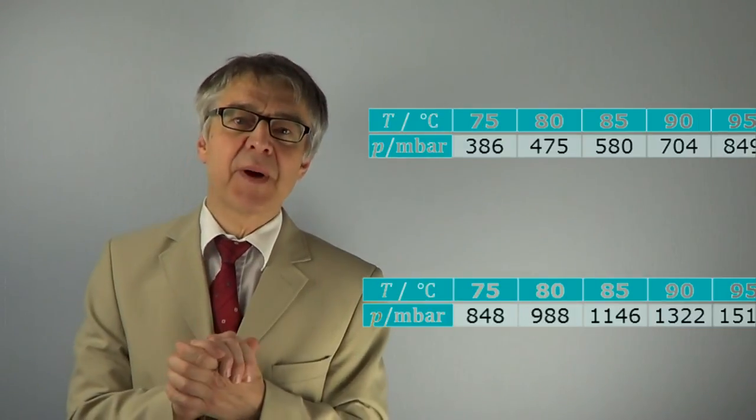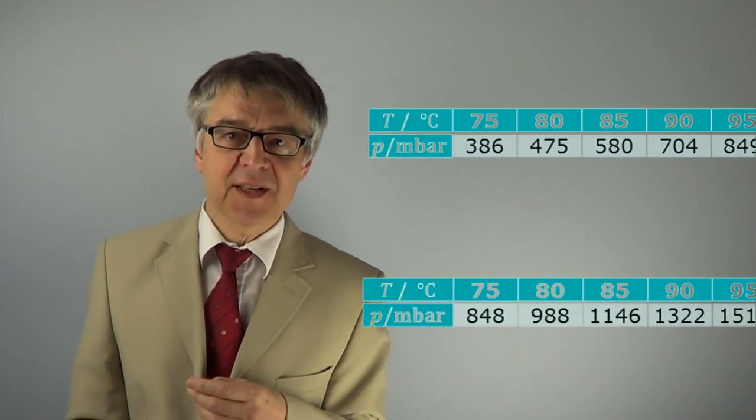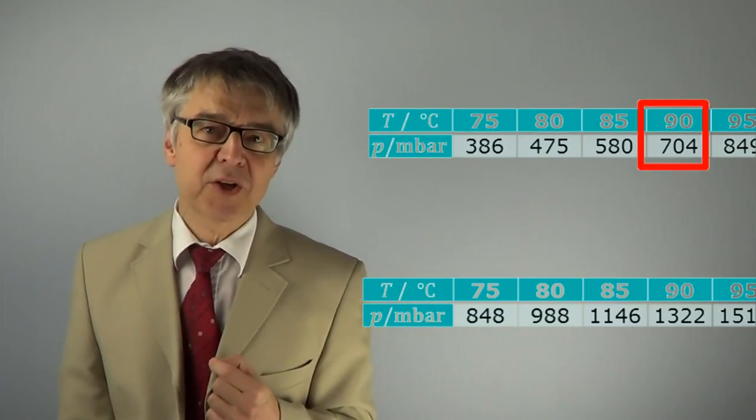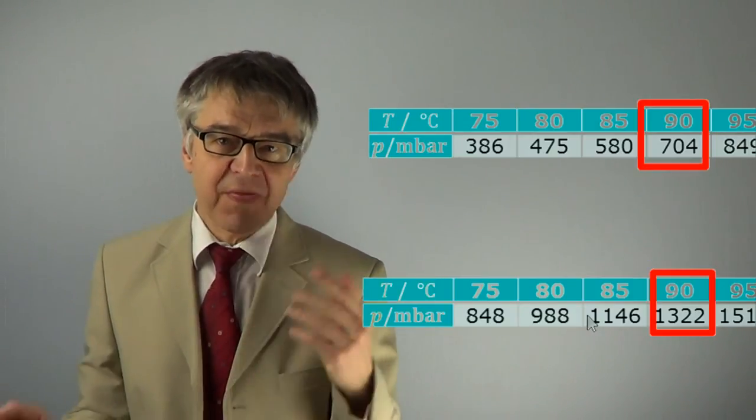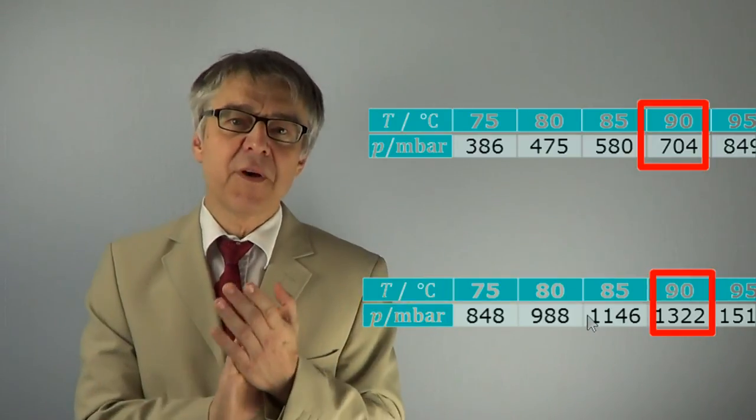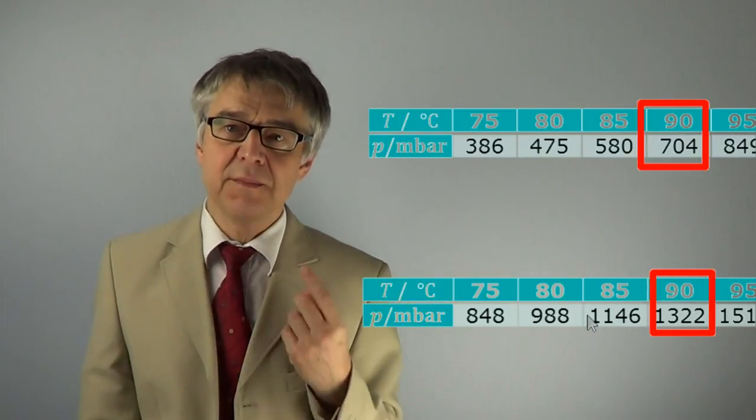Obviously, at about 90 degrees Celsius, the sum of the vapor pressures reaches about 2 bars. And this is the boiling point of any water-cyclohexane mixture.